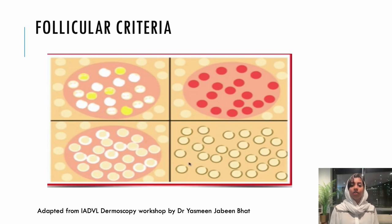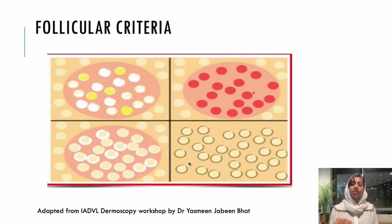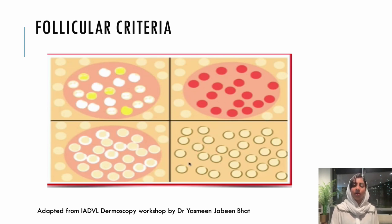Coming to the follicular criteria: you can see white dots or yellow dots. White dots indicate follicular fibrosis. Yellow dots mainly indicate sebum — for example, an empty hair follicle with collected sebum secretions gives a yellow color. Red dots indicate follicular inflammation. Additionally, there can be perifollicular white coloration or perifollicular pigmentation. These are the different findings when you observe the follicle through a dermoscope.